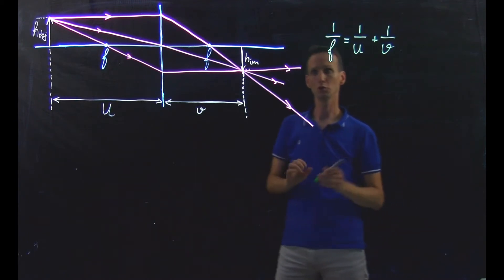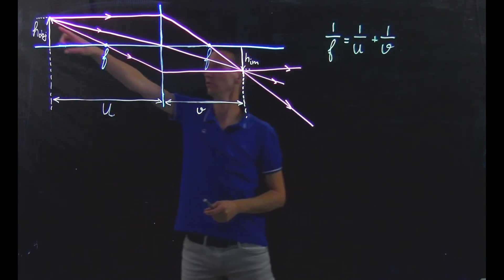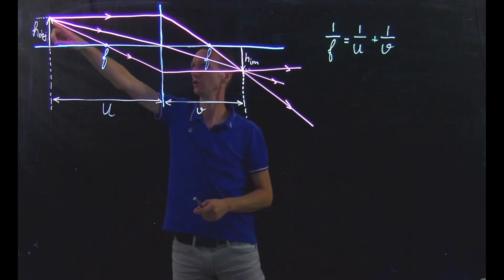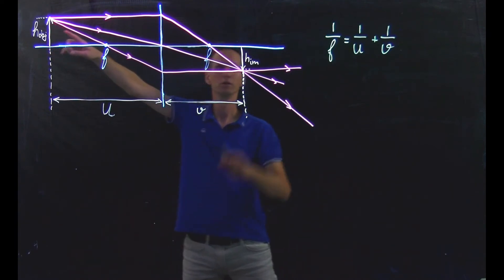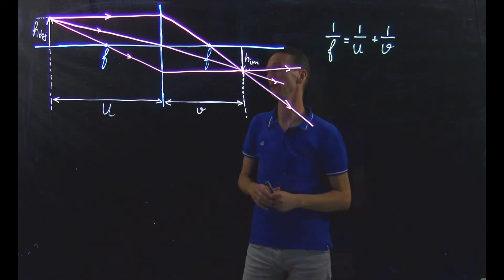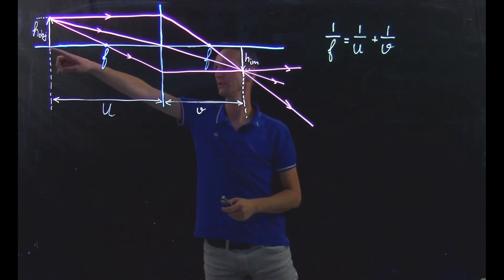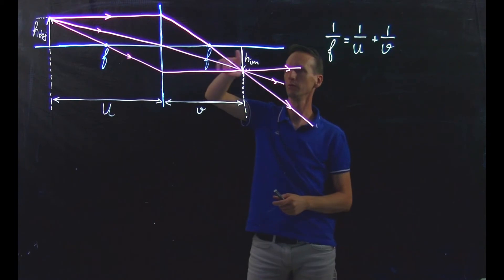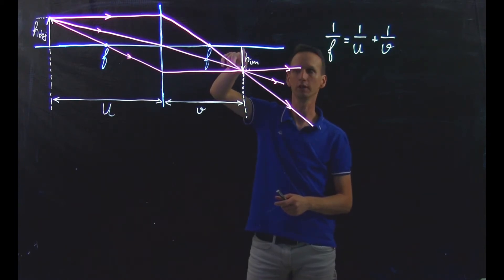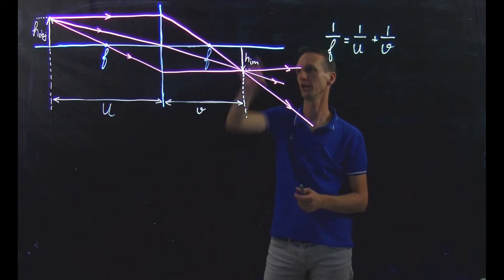We should also note that the same ray tracing we can do for every position on this object, so that we in fact retrieve the full image. The only difference will be the point on the axis where the ray tracing leads to rays crossing the axis at the position of the image on the other side of the lens.